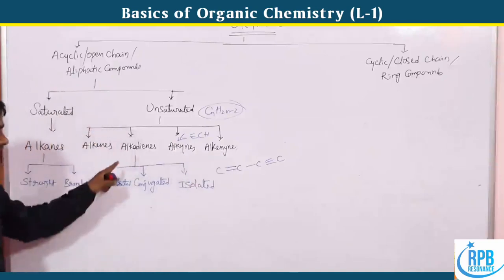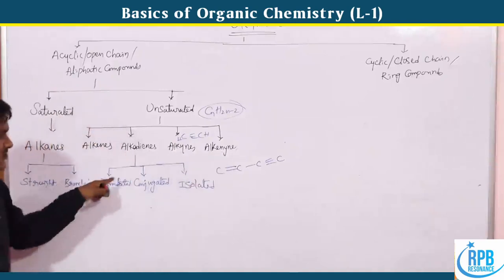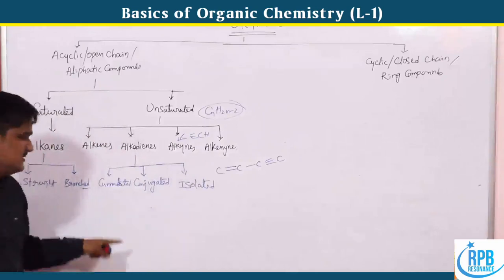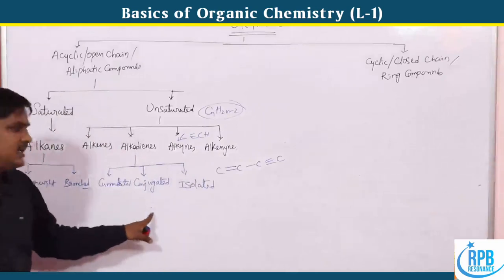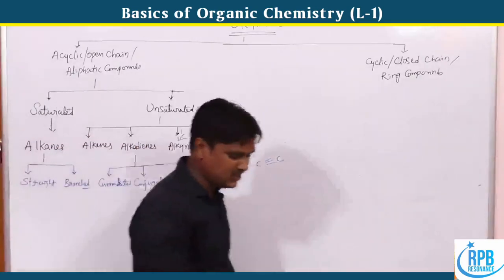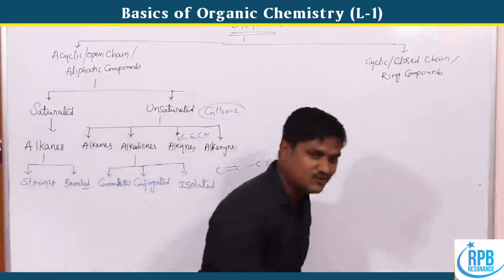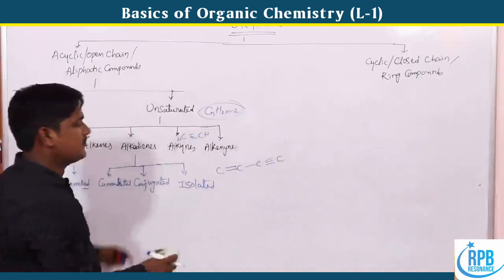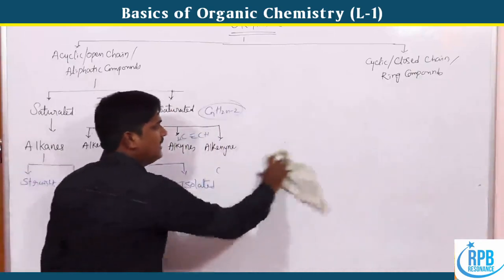Alkadienes are further classified into cumulated, conjugated, and isolated types. This completes the acyclic part of organic compound classification.